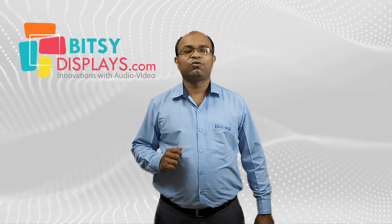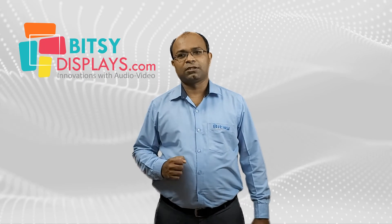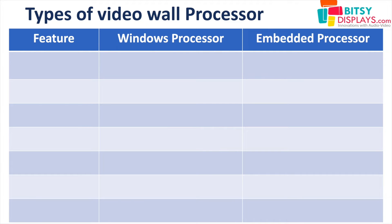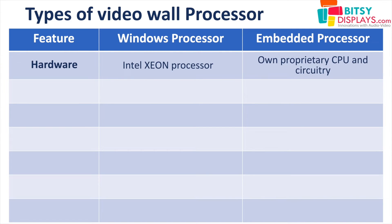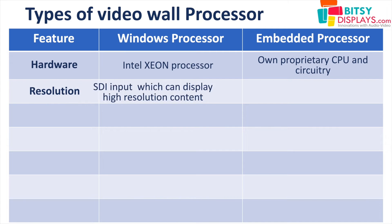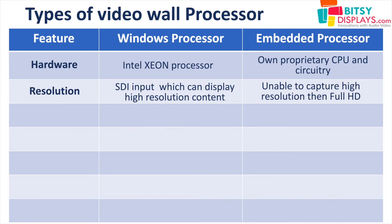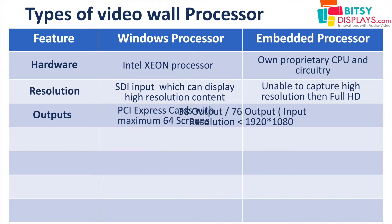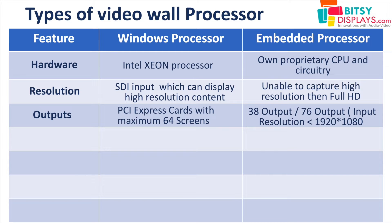So which type of video wall processor should you use for these kinds of applications? There are two types: Window-based video wall processor and Embedded video wall processor hardware. Window-based processors have Intel Xeon processors. Embedded processors have their own proprietary CPU and circuitry for video wall processor applications. In terms of resolution, window-based processors have SDI input which can display high-resolution content, whereas embedded processors are unable to capture resolution higher than Full HD. For output, window-based processors use PCI Express cards and are scalable as per user requirements, supporting up to 64 screens. Embedded processors have standard outputs like DVI and HDMI, with standard output supporting 36 or 76 screens.